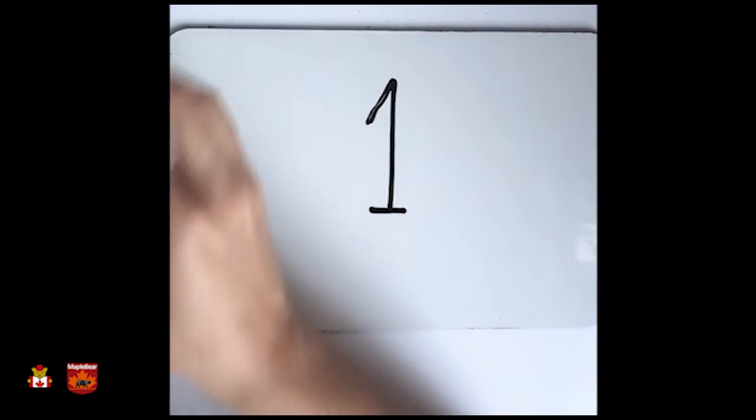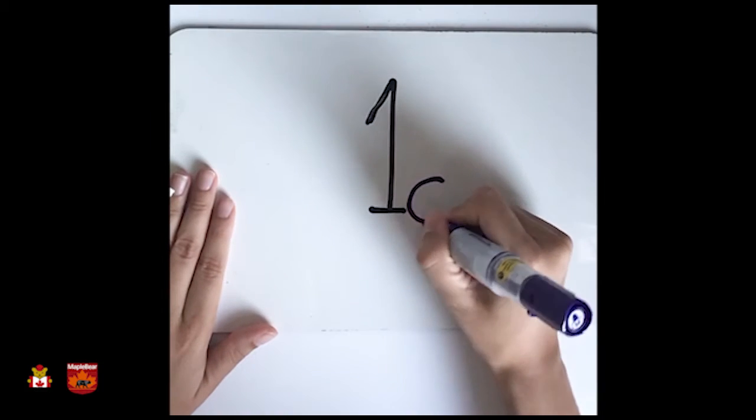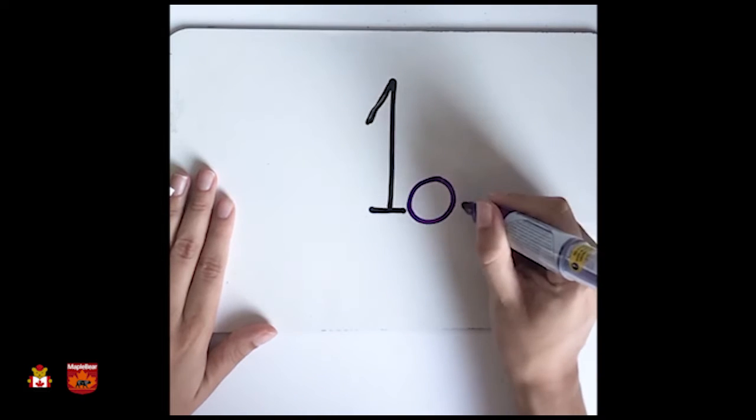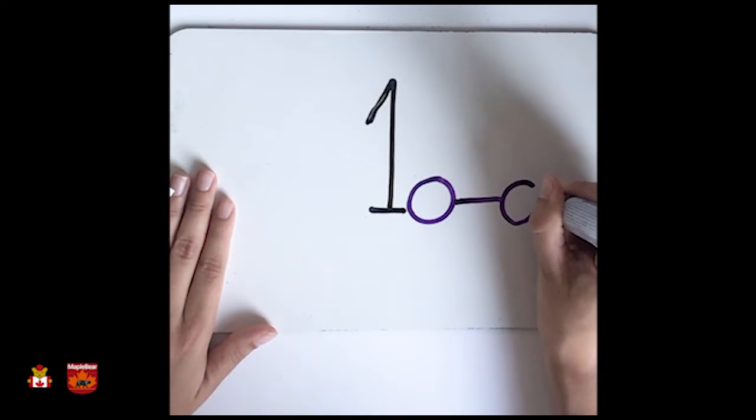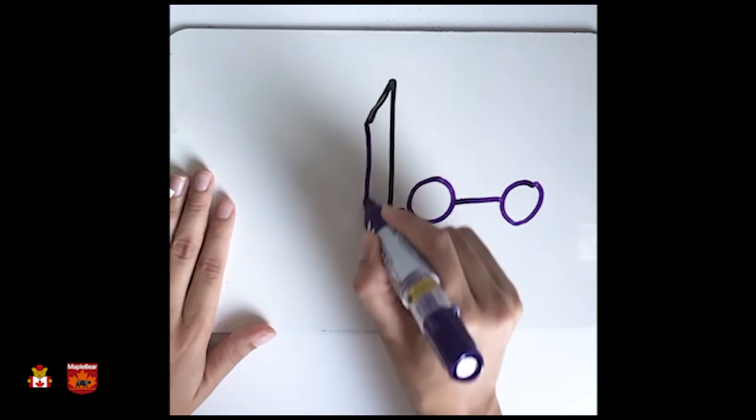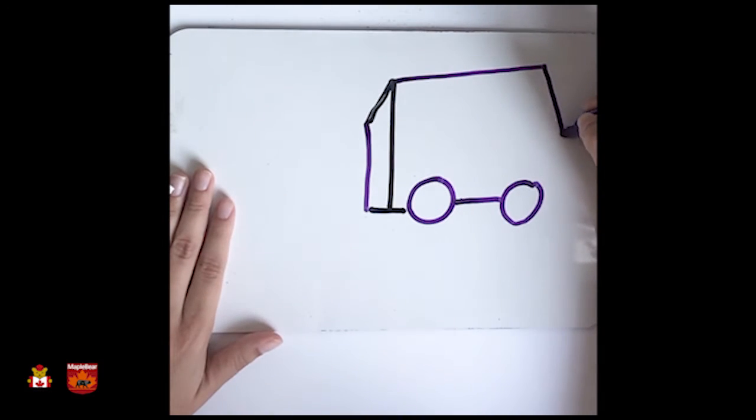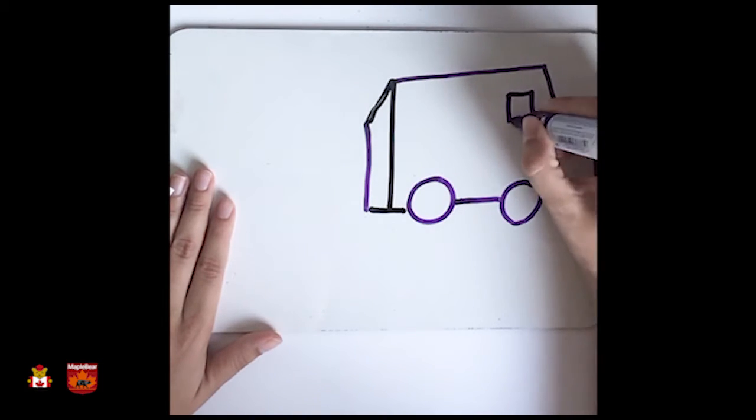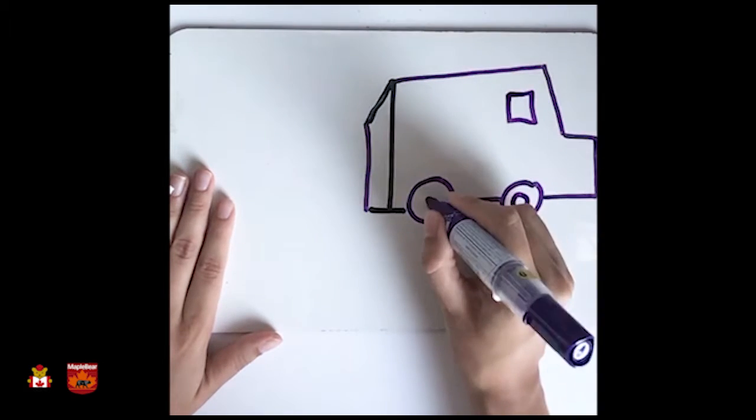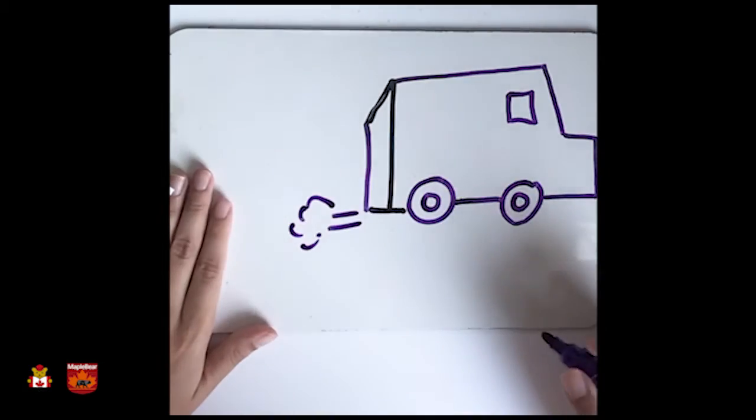And from that, we can do lots of different things. So once you start, first you do a circle, then like this. And here I can trace a line, then another line here. Go down. Can you guess what is this? And now, from number one, we have a truck.